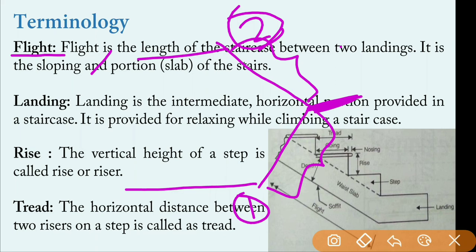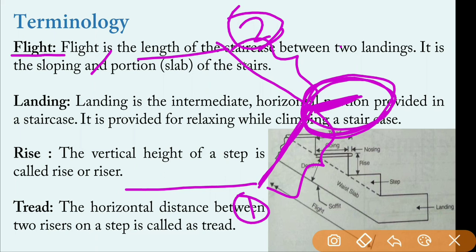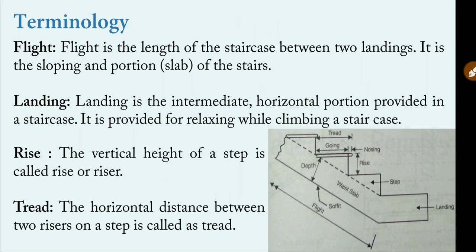Landing is the intermediate horizontal portion provided in a staircase. It is provided for relaxing while climbing. A person climbs from floor number one to the intermediate landing — this portion of the staircase is called the landing, where a person can rest for some time and then again climb to the next floor level. This is the landing where the person can relax.